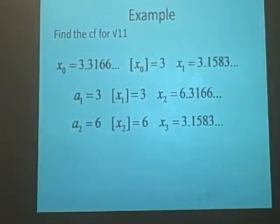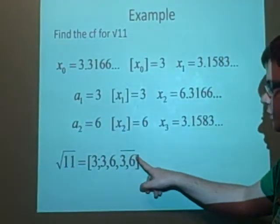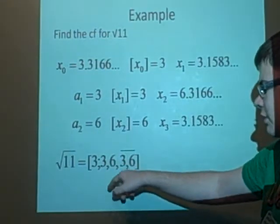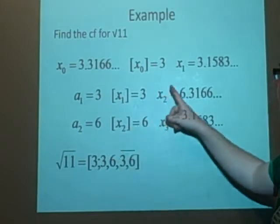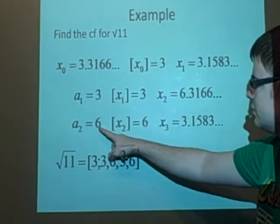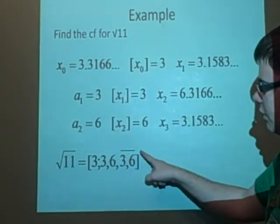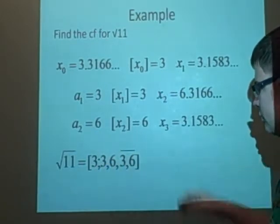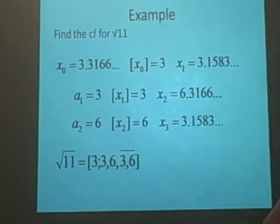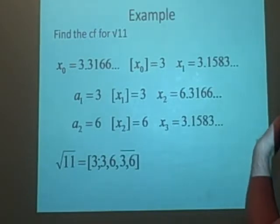So we can denote this by putting a line over the top. But we can put 3, there's a semicolon, and we've got 3, 6, and that's going to keep repeating. So we put a line on top of it, just showing how to repeat. Now what we can do with this, we can find an approximation for the value of the square root of 11.